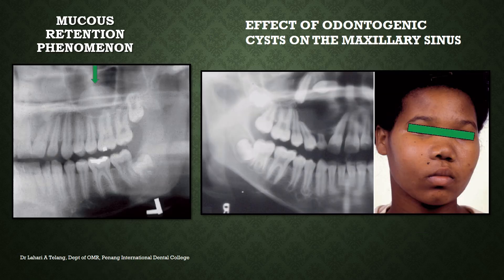This is another example using a panoramic image to observe a mucus retention phenomenon, seen as a radio-opaque soft tissue mass within the floor of the sinus. The image on the right shows the effect of an odontogenic cyst on the maxillary sinus — the floor is pushed up and the entire cyst occupies the maxillary sinus with displacement of impacted teeth. The patient has a large swelling over the cheekbone area with even involvement of the nose.